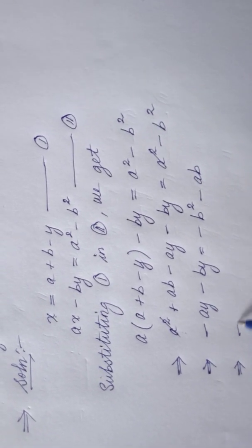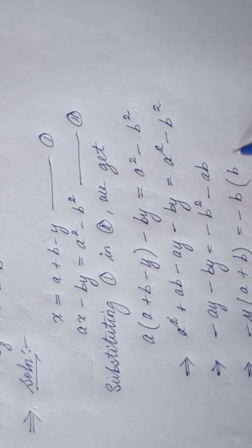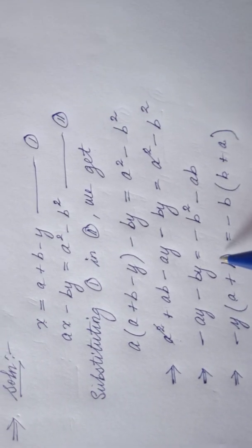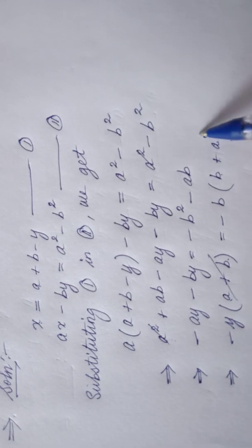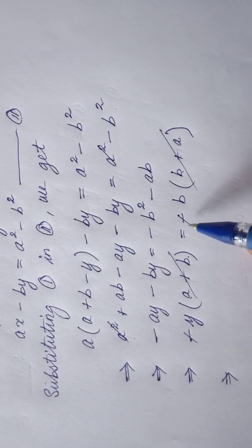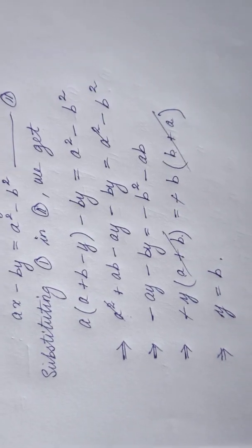Here negative y is common, so we factor out negative y to get (a plus b). Here negative b is common, giving (b plus a). Since a plus b is the same as b plus a, these two factors cancel each other, and the negatives cancel as well. So we have y is equal to b — the value of y is b.